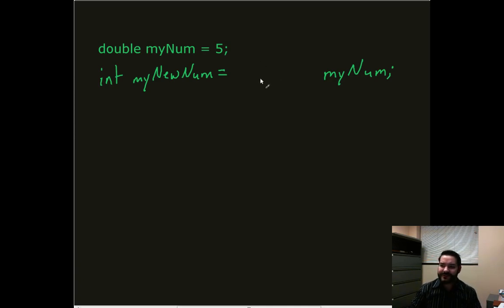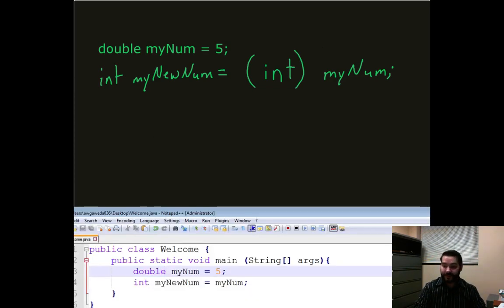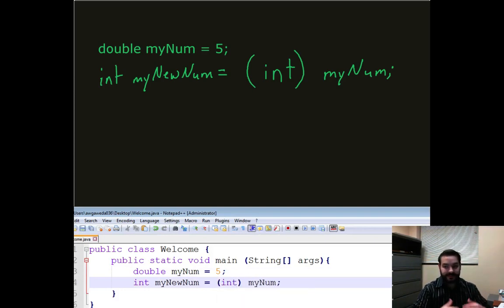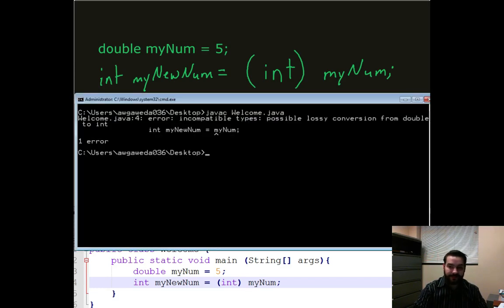Inside here, I left this space, but what I have to do is I have to include an extra command. I have to include, inside of parentheses, the word int, the data type that I plan on converting into. So if I come in here now and I throw in int in front of myNum, then if I try and compile this,